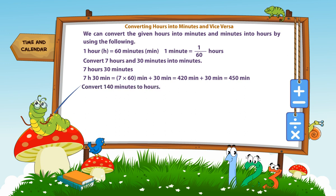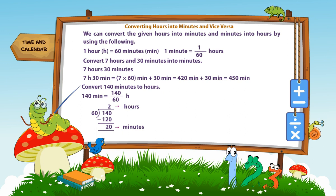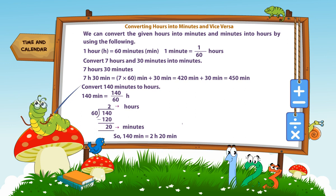Convert 140 minutes to hours. 140 minutes is equal to 140 divided by 60 hours, so 140 minutes is equal to 2 hours 20 minutes.